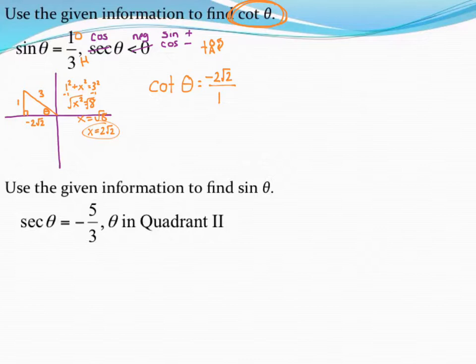And I would need to simplify that if necessary. This time, it's not necessary to simplify it. It's already simplified. So there is my cotangent of theta, -2√2. All right, let's try one more example down here.